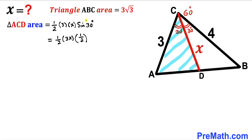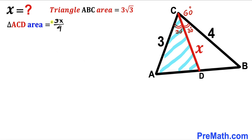Simplifying the right hand side gives us 3X divided by 4. So the area of triangle ACD turns out to be 3X divided by 4.